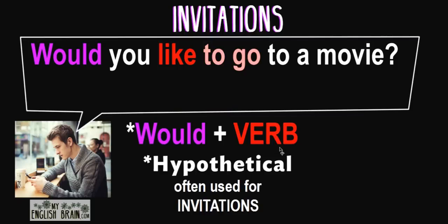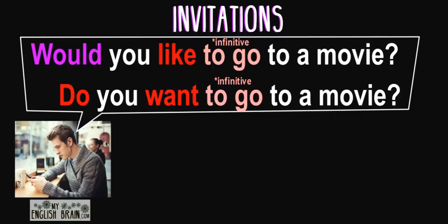'Would' and the verb is our form of using a hypothetical. It's often used for invitations. So remember, 'would' and a verb is the hypothetical in English, and we often use it for invitations. Would you like to go to a movie? We have another way to ask, using 'do': Do you want to go to a movie? Again, using the infinitive. So two ways to make the invitation: the first with 'would' and 'like' plus the infinitive, or with 'do' and 'want.'